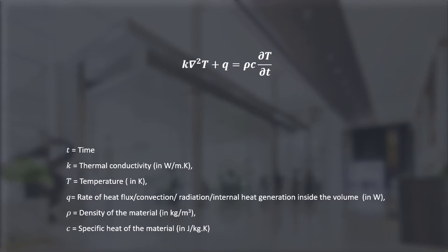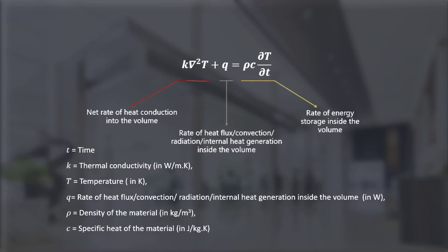Note that the first term represents the net rate of heat conduction into the volume. The second term represents the rate of heat generation inside the volume. And the last term is the rate of energy storage inside the volume. The presence of variable T indicates that the temperature changes with time, and this is a transient phenomenon. And this term differentiates the transient state from the steady state.